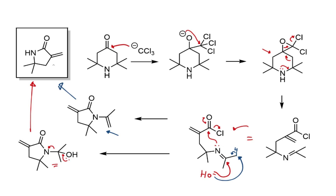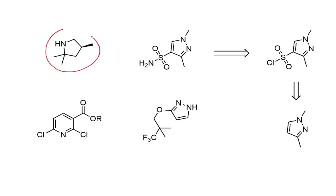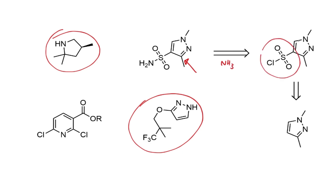The final steps of the synthesis involve chiral reduction of the exomethylene group, followed by a stronger reducing agent to reduce the lactam to the pyrrolidine. For the sulfonamide pyrazole fragment, a brief look at the literature suggests it's almost certainly made by reaction of a sulfonyl chloride with ammonia to form the sulfamide, where the sulfonyl chloride is obtained from the unsubstituted pyrazole reacting with chlorosulfuric acid.